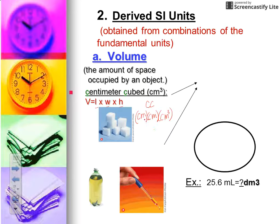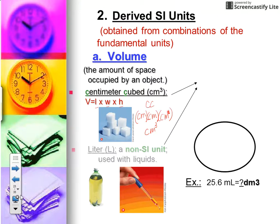Mathematically, if you were to take a centimeter times a centimeter times a centimeter, you would have a centimeter cubed. A centimeter times centimeter times a centimeter would give you centimeters cubed. This is derived because it comes from the formula that you see here.